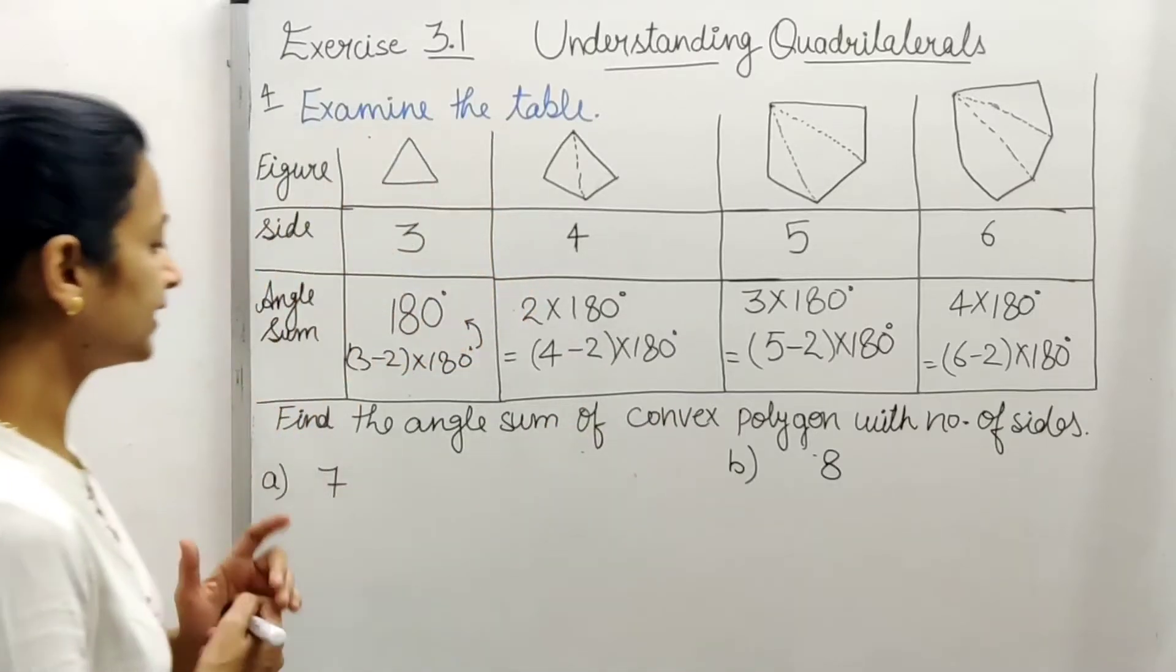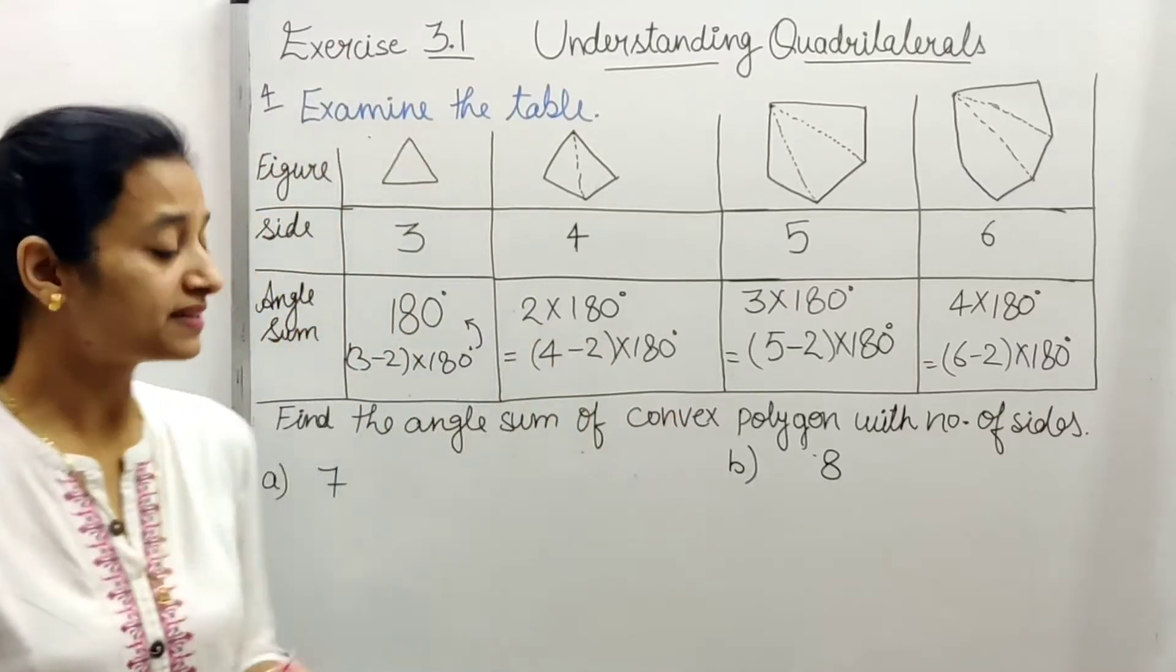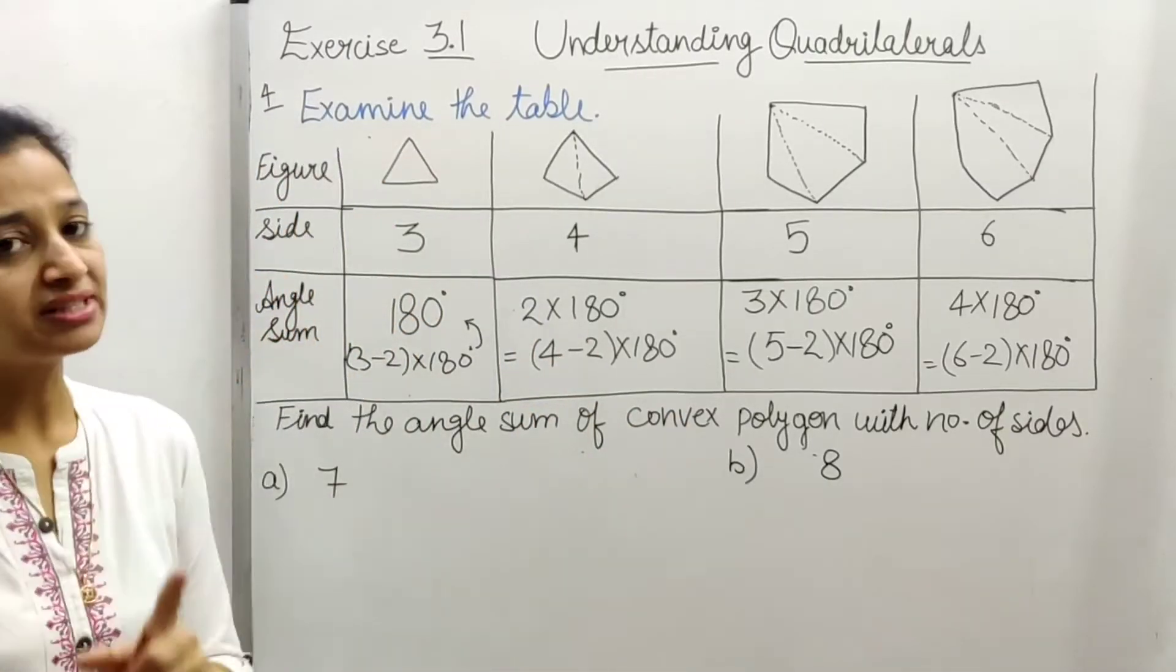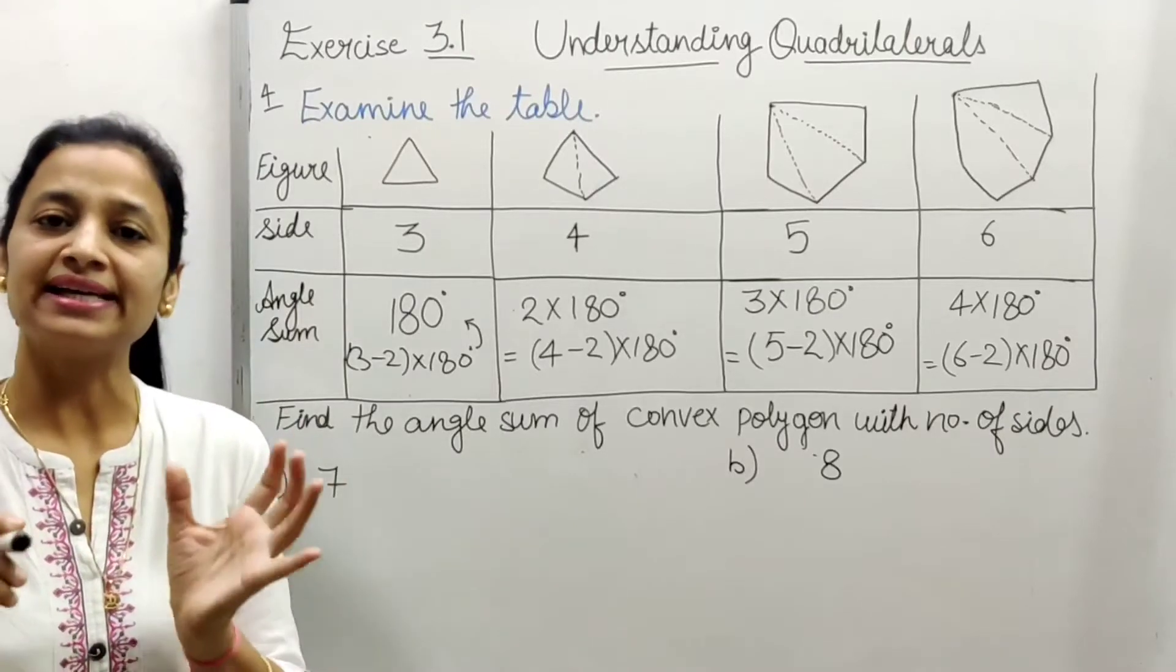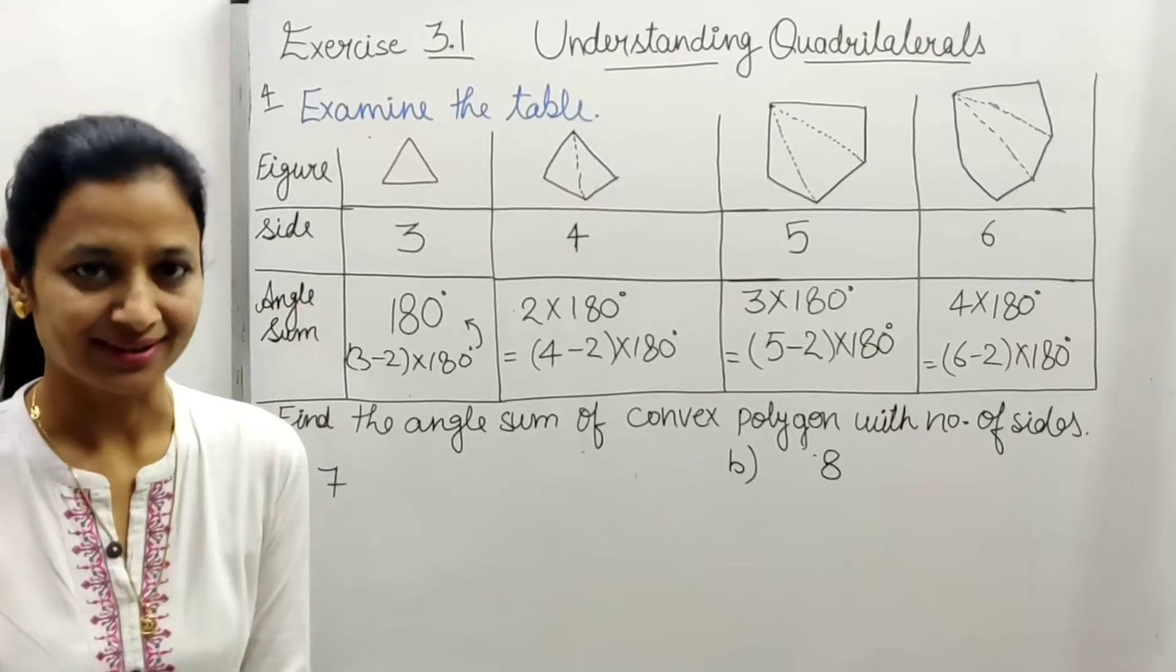Now we have asked, angle sum we have to find in convex polygons which is the number of sides we have given. So a given is, 7 sides means polygon is, which side is how many? 7.